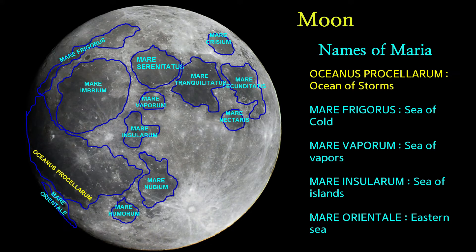Oceanus — ocean. Due to its size, Oceanus Procellarum is the largest of the Maria seas, stretching more than 2,500 km across its north-south axis and covering roughly 4 million square km, accounting for 10.5% of the total lunar surface area. Oceanus Procellarum means Ocean of Storms.